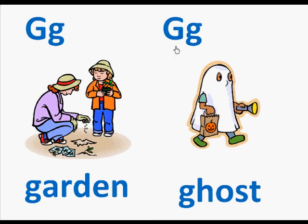Here we have the capital letter G, the small letter G, a picture of a ghost. Here's the word ghost. The letter G makes the sound guh. So we'll read this page: G, ghost, guh guh guh.